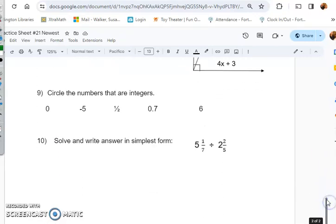Number nine, quick review: circle the numbers that are integers. Remember you need to cross out decimals and fractions. Integers are everything you know except decimals and fractions, unless they're trying to trick you. Circle everything else that's left.